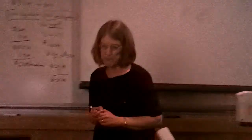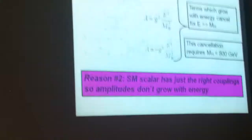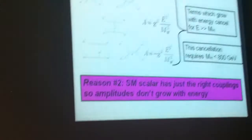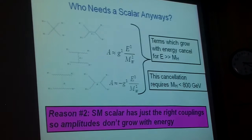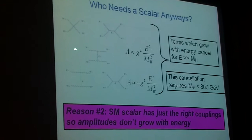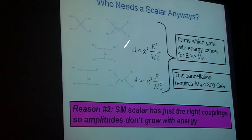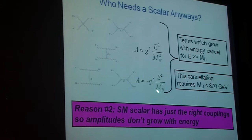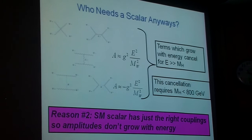All right, so to continue, well, who needs a scalar anyways? Well, we fit our data with it, but it also has a theoretical reason. If I look at WW scattering, so W+ W- goes to W+ W-, the amplitudes with gauge boson exchange grow with energy. The amplitudes with scalar exchange also grow with energy, but the couplings are exactly right so that the contributions which grow with energy cancel. So the standard model scalar has just the right coupling so the amplitudes don't grow with energy.